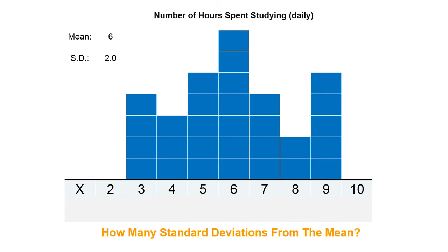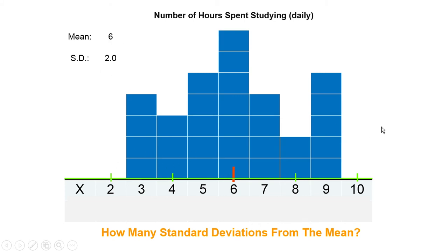Z-scores work whether you've got a population or a sample. Somebody gives you the mean and the standard deviation — now you've got what you need to calculate z-scores. Here's the mean: six. The z-score step is two, so you measure from the mean up or down in steps of two hours — that's one standard deviation. The question mark here — what's its z-score? That's negative one. What about the person at eight hours? That's plus one.